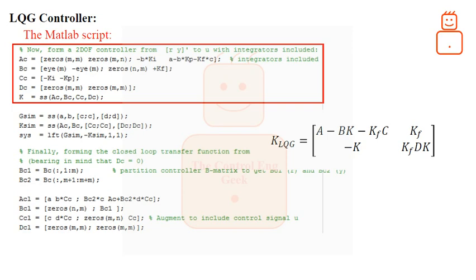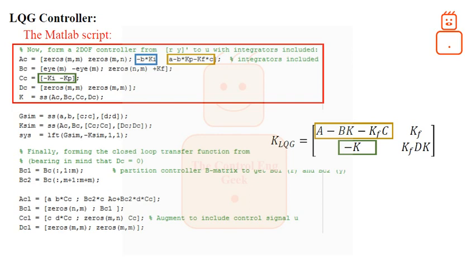Please pay attention to the following: the item -P·Ki represents the integrator gains. The second item, which is A - P·Kp - Kf·C, is the first item in the LQG gain matrix as illustrated by the yellow box. For the first item in the second row, we need both the integrator and state feedback gains to define it, as shown by the green box. The last item in the second row is zero, as we have a zero matrix D from the state-space realization of the given transfer function.